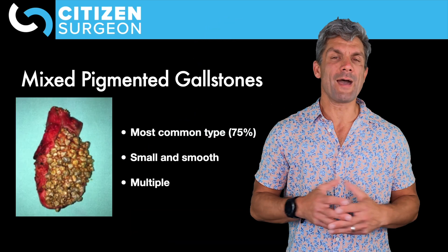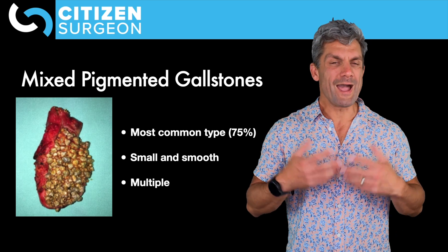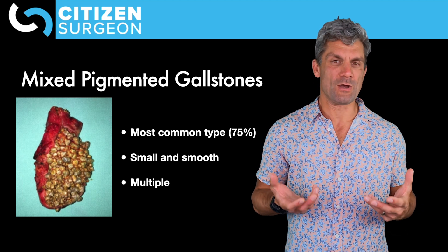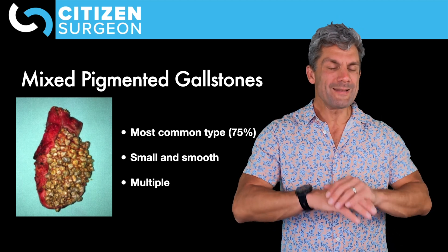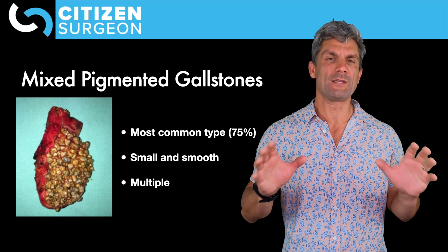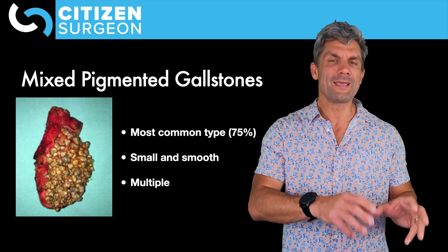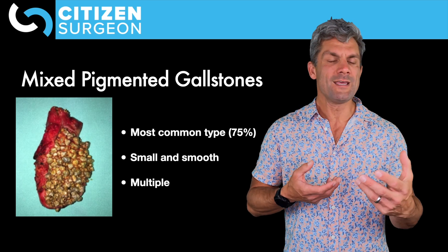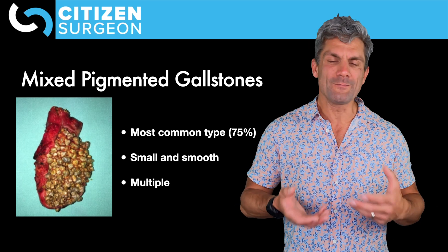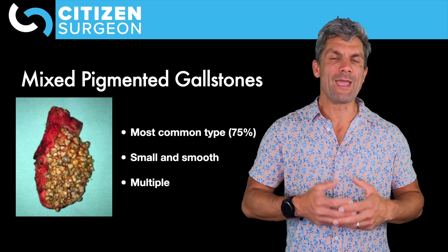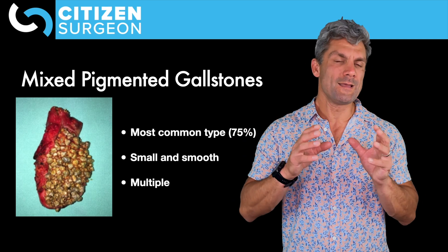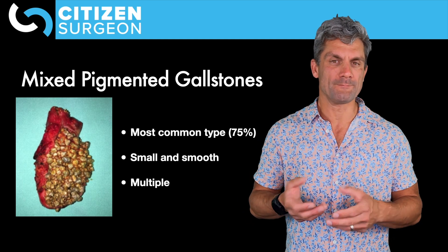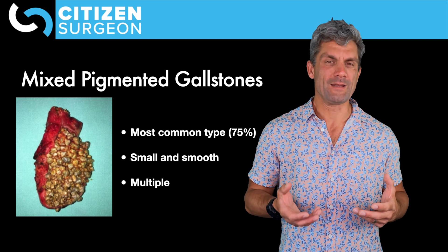The last type to discuss are mixed pigmented stones. These are basically cholesterol stones — not totally 100% pure cholesterol, but cholesterol combined with bilirubin. They are the most common type of stone. Those light green pigmented stones shown at the beginning — that's a mixed pigmented stone. It's the combination of cholesterol with bilirubin that gives it that green color.